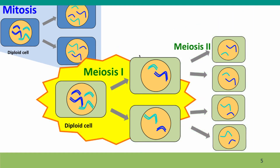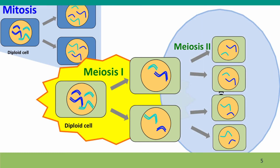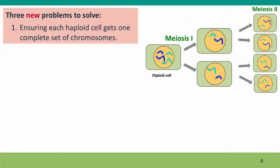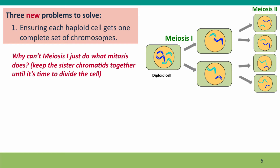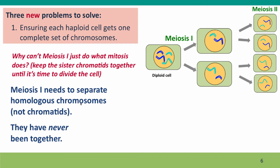Meiosis one is where all the interesting new things happen, and meiosis two is basically just like mitosis. Meiosis has three new problems to solve, and in this lecture we'll talk about the first: ensuring that each haploid cell gets one complete set of chromosomes. You might wonder why meiosis can't just do what mitosis did. Mitosis keeps the sister chromatids together until it's time to divide the cell, and that works great. But that won't work for meiosis one, because what meiosis one needs to separate isn't sister chromatids — it's homologous chromosomes.